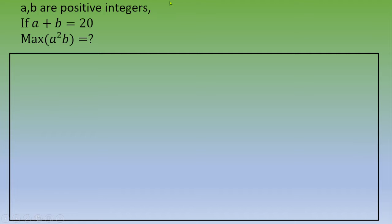There are many ways to solve this exercise. One way is to list all the values. We know that A and B are positive integers and A plus B equals 20. So you start with A equals 1, then B equals 19; then A equals 2, then B equals 18; and so on. Each time you calculate A squared times B and pick the highest number.